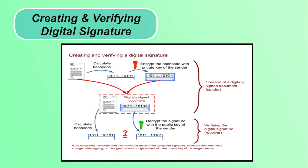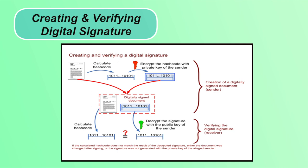The complete process of digital signature: first, the hash value of the message is calculated using a hash function. Then the calculated hash code is encrypted using the sender's private key. The document plus encrypted hash value is sent to the receiver — this is the creation of a digitally signed document. The receiver gets the original document plus encrypted hash value, decrypts the hash code using the sender's public key, then calculates the hash code of the received document. The received hash code and calculated hash code are compared. If equal, no modification has been made during transmission.